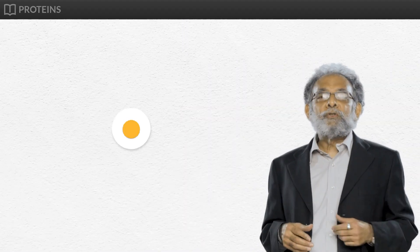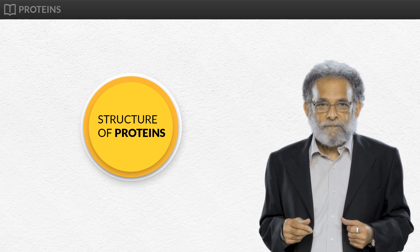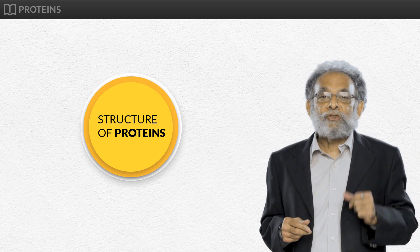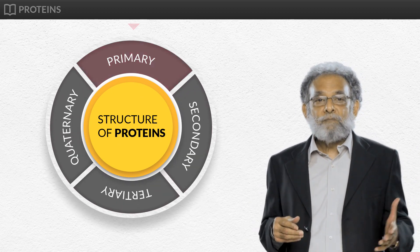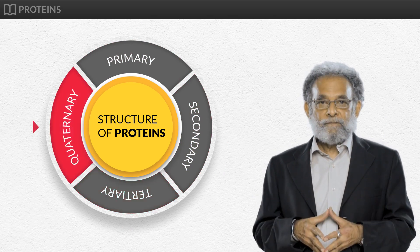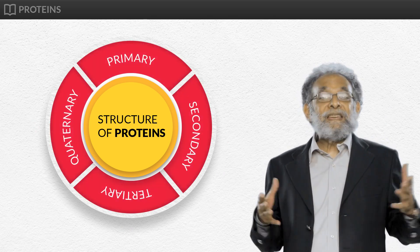Now let's move on to the structure of proteins. Biologists describe the protein structure at four levels, namely primary, secondary, tertiary, and quaternary. Let me discuss them in detail.